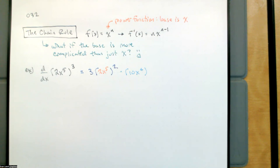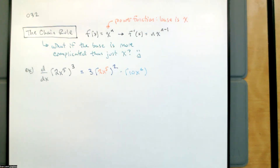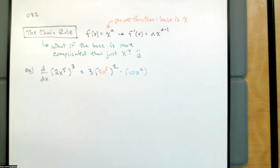This will all come out to 120x to the 14th. 2 squared is 4, 3 times 4 is 12, 12 times 10 is 120. x to the fifth squared is x to the 10th, times x to the fourth gives x to the 14th. So it gets us to the same place — and that's good. If it got us to a different place, something would be wrong.